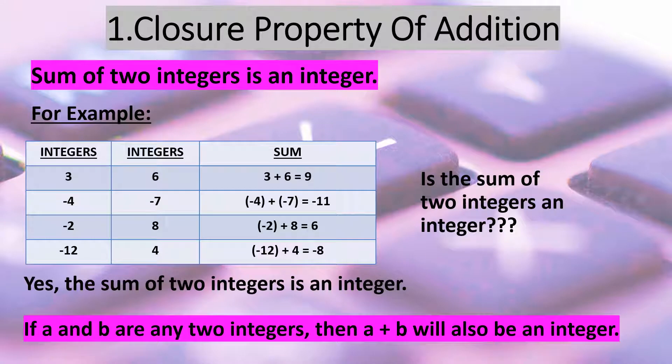The sum of two integers is an integer. Therefore, this property tells us, if A and B are any two integers, then A plus B will also be an integer.